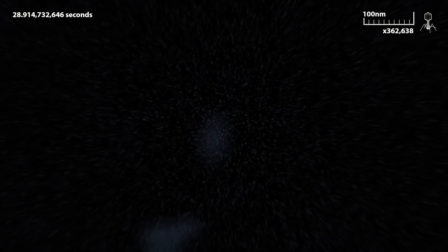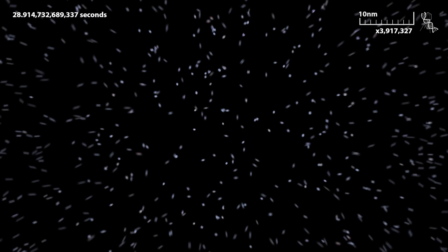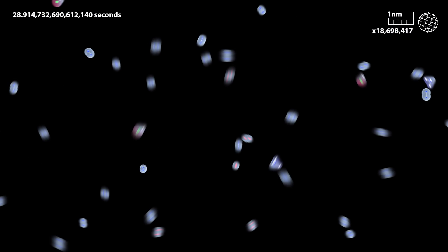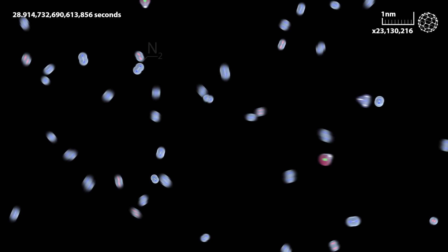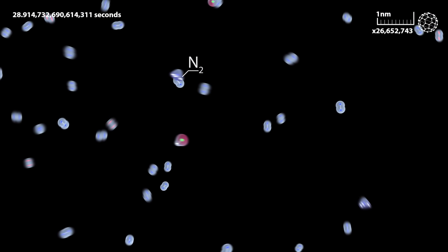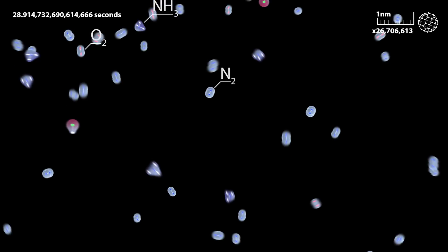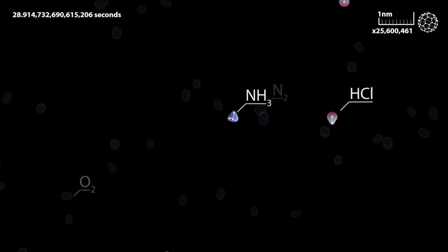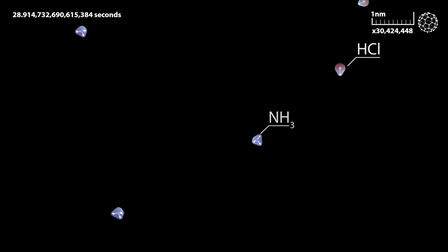We need to zoom in 1,000 times greater to visualize separate molecules. Now we can observe molecules. There are not only molecules of ammonia, hydrogen chloride and ammonium chloride, but also plenty of oxygen and nitrogen molecules from the air. We won't consider them anymore because they have no interest for us, as they don't react with anything else here.